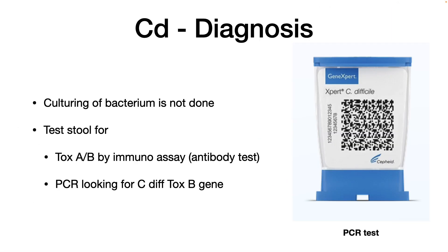Diagnosis of C. difficile involves using some type of rapid test. Culturing the bacterium is usually not done because it is a strict anaerobe, so it's more difficult to grow. They will test your stool by immunoassay for ToxA or ToxB, or they may do a PCR test. The PCR has primers that bind to either side of the ToxB gene and amplify it. Those are the two ways this can be tested.